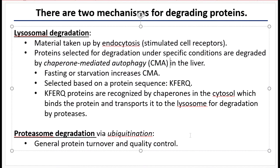Proteasomal degradation functions at a constant rate and just helps to turn over proteins, breaking down old proteins to create new ones and also recognizing toxic proteins and breaking them down to create new, better-functioning proteins. Proteasomal degradation happens at a constant rate as part of the general maintenance of the cell, whereas lysosomal degradation is only activated in response to a metabolic need.